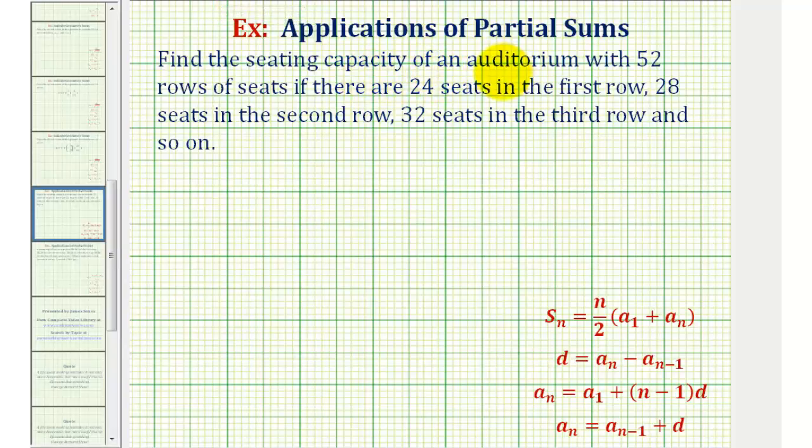We want to find the seating capacity of an auditorium with 52 rows of seats if there are 24 seats in the first row, 28 seats in the second row, 32 seats in the third row, and so on.